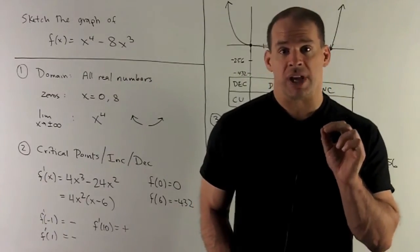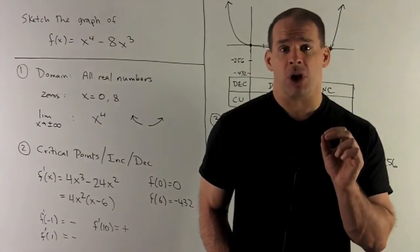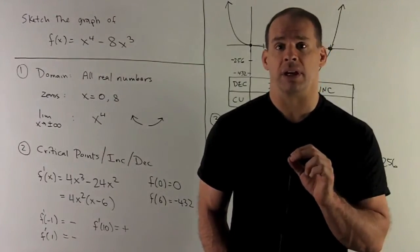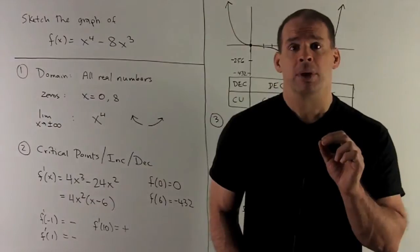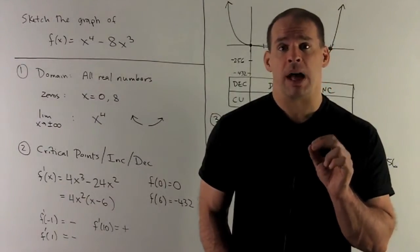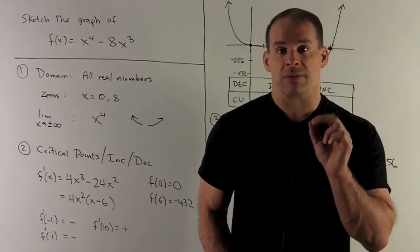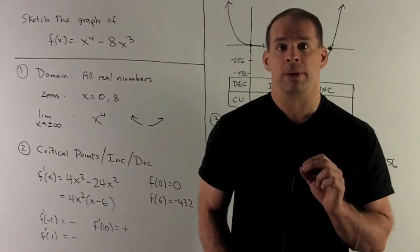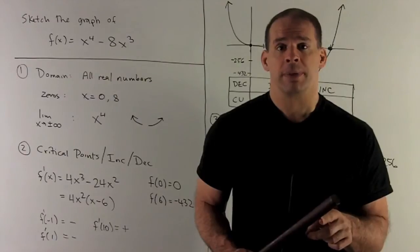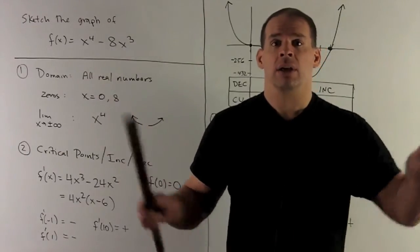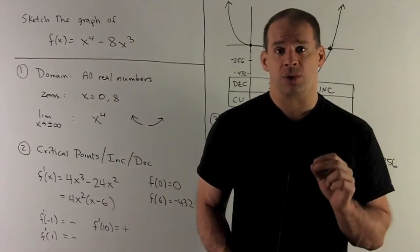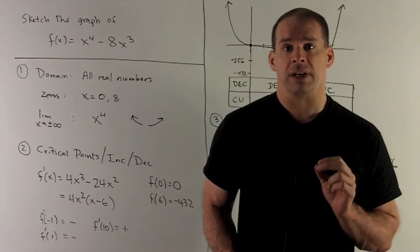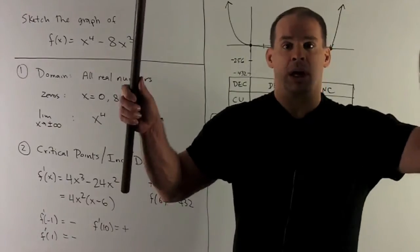Next, we can check the behavior of our function as x goes to plus infinity and minus infinity. We just check the lead term in the polynomial, x^4, and the behavior of our function is the same as the lead term. Since x^4 goes off like this, as x goes to plus or minus infinity, our function goes to plus infinity. That just means pointing up.